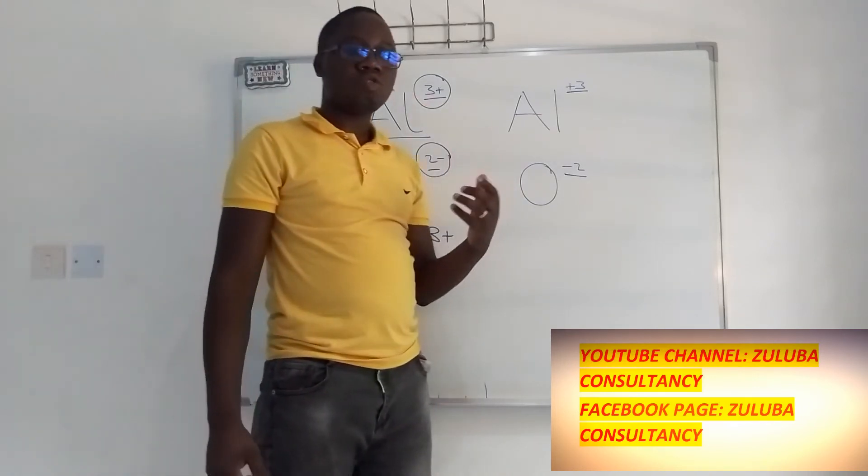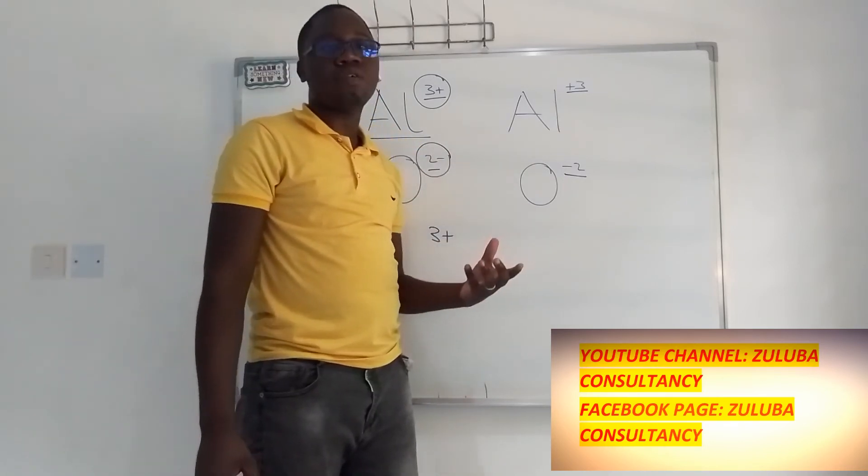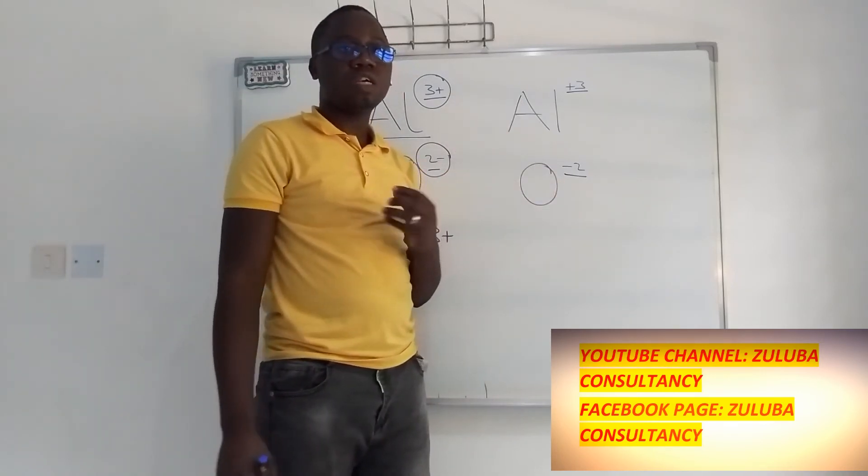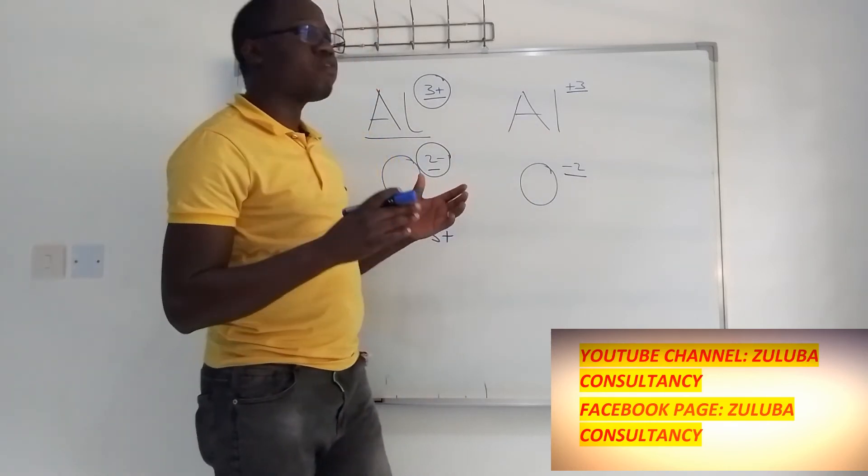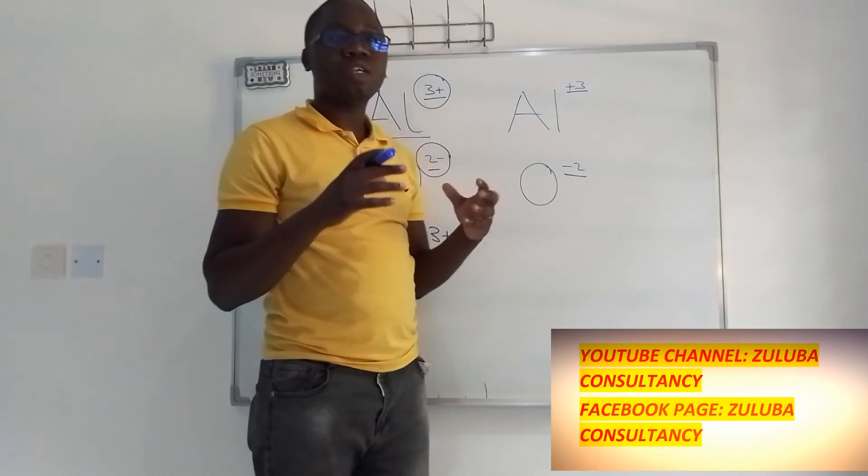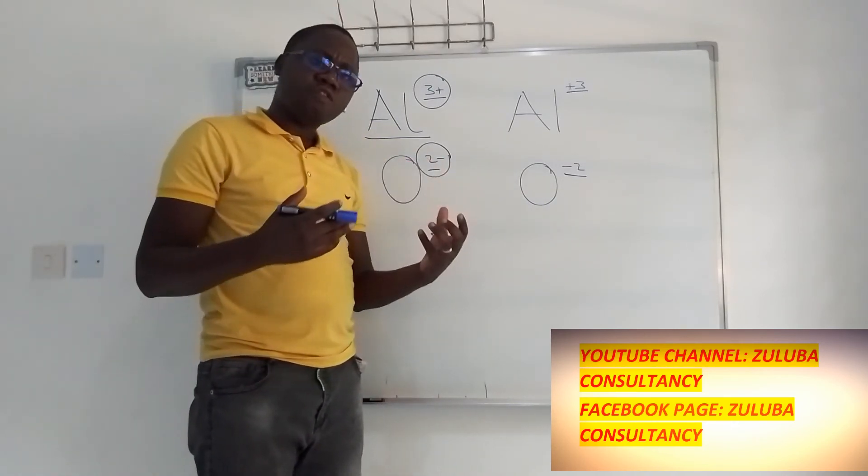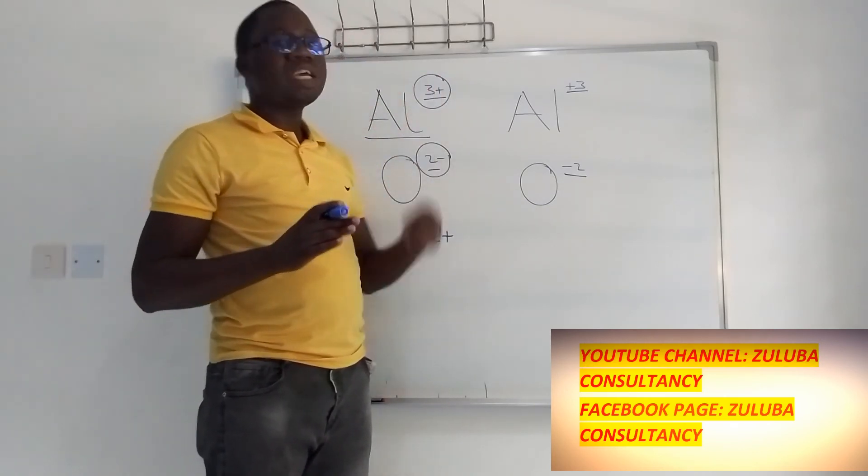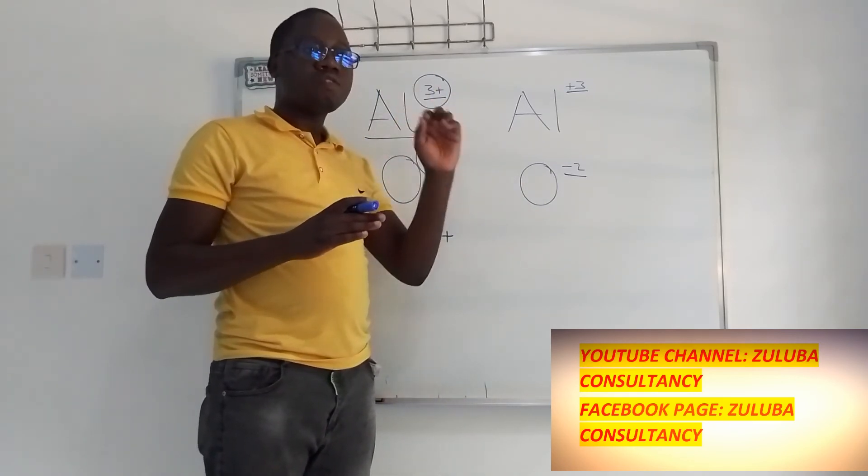Now in situations where you have covalent compounds, it is very difficult for you to know the formal charge of the atom. In the case of covalent compounds, we know that when a compound is covalent, electrons have been shared. Now it becomes difficult for you to separate the charges. Hence oxidation number comes to help to resolve that issue.